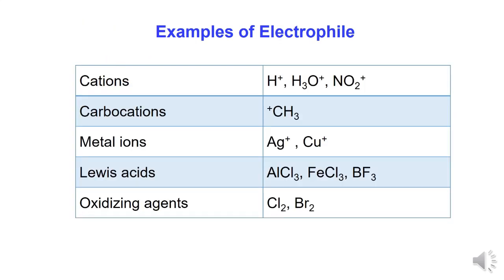Examples of electrophiles: Cations, which are positive-charge ions, such as hydrogen ion (H⁺), H3O⁺ (hydronium ion), and NO2⁺ (nitronium ion).